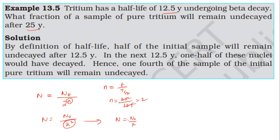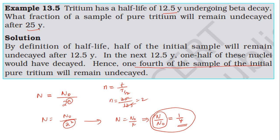Therefore N/N₀ = 1 / 2² = 1/4. One fourth of the initial sample of tritium will remain undecayed after 25 years.